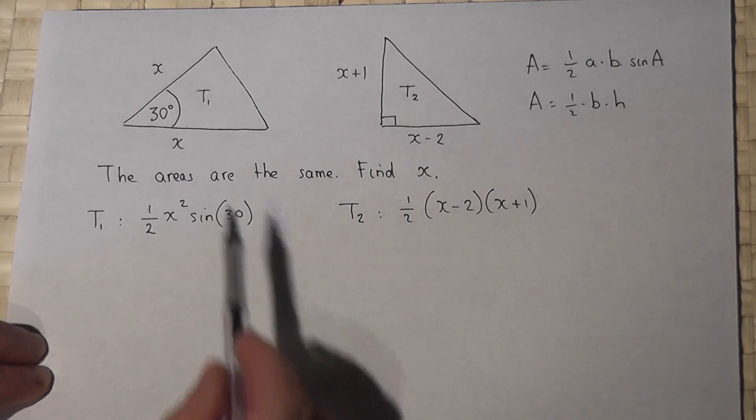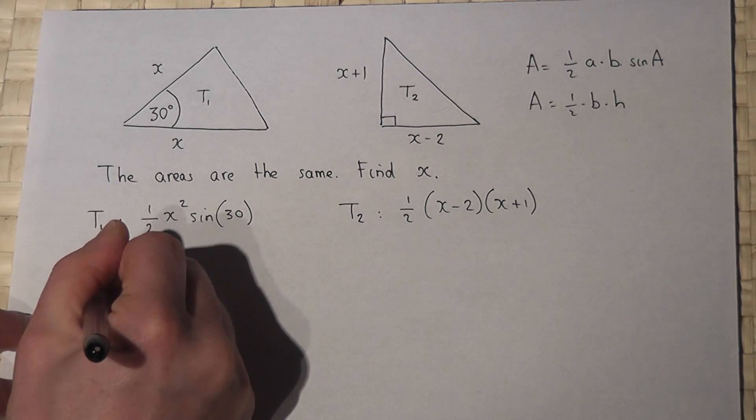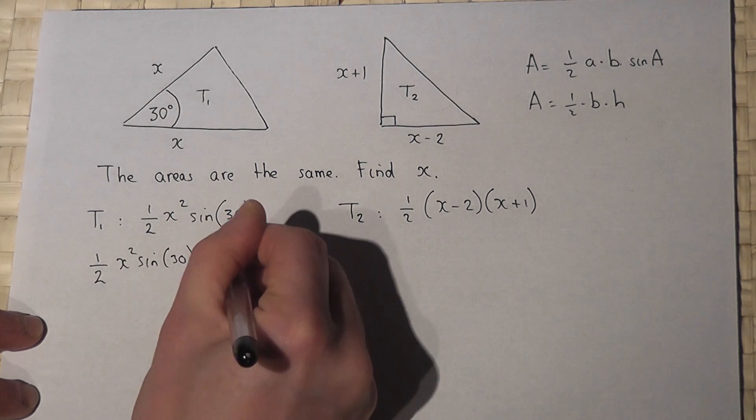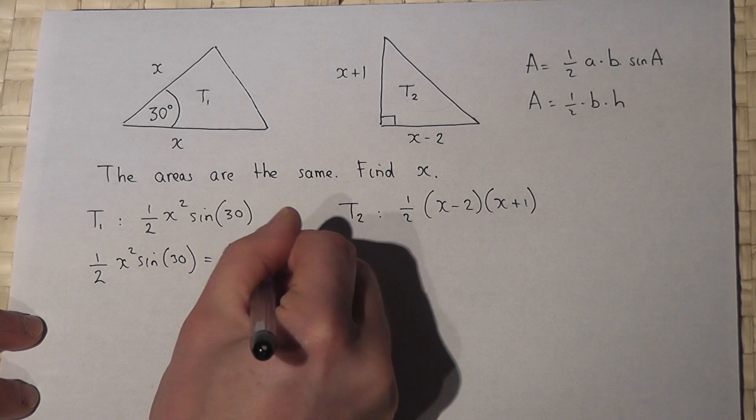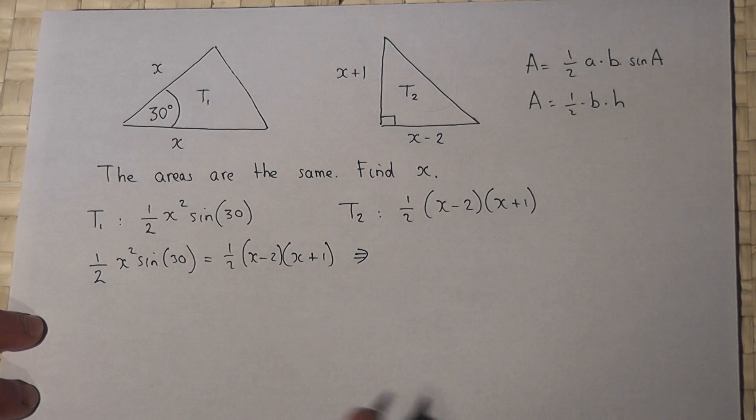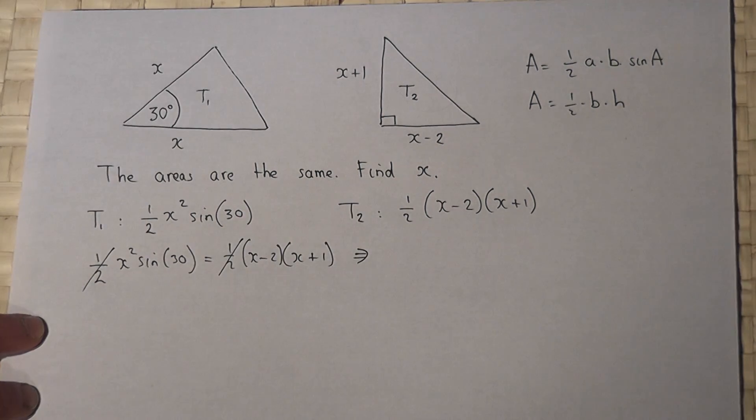So because the area is the same, we can set an equation up as follows: a half x squared sine 30 must equal a half times x minus 2 times x plus 1. Now my first instinct is to cancel off the halves by multiplying by 2. So therefore those halves cancel off.